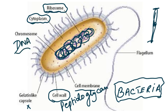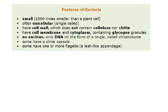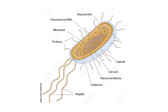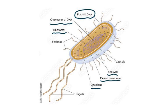The features of a bacterium: very small, unicellular, cell wall not made of cellulose or chitin, has cell membrane and cytoplasm, glycogen granules, no nucleus, only DNA as a single coiled chromosome, ribosomes as the site of protein synthesis. Some have a slime capsule and some have one or more flagella. Some also have additional DNA in the form of small circles called plasmid DNA, besides the main chromosomal DNA.